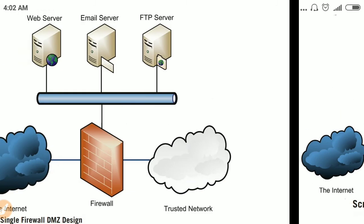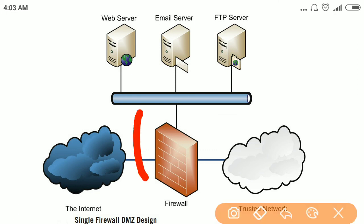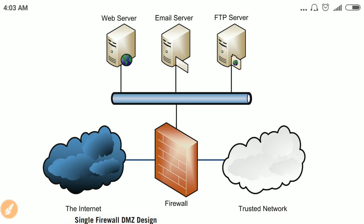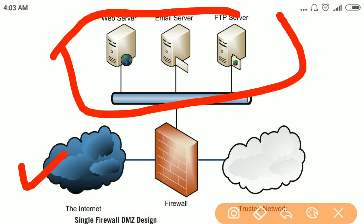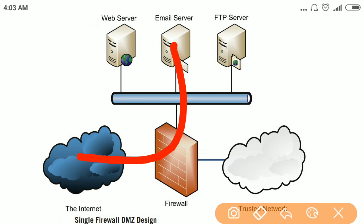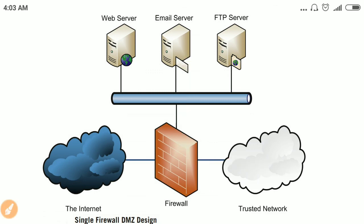The DMZ or demilitarized zone is also implemented using a single firewall, but this single firewall is a single point of failure. It must filter all interfaces, and this is also called a three-legged architecture. One leg is the DMZ, one is the internet, and one is the internal network. Anyone coming from the internet is not granted access to the internal network and must first go to the web server, which can then initiate traffic with the internal servers.